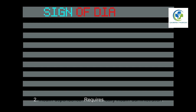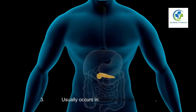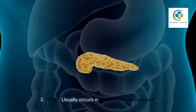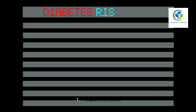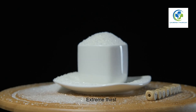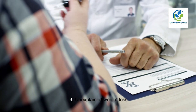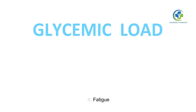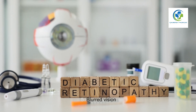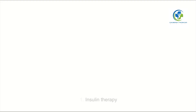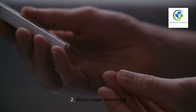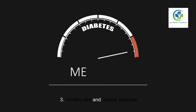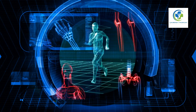Key characteristics of type 1 diabetes: autoimmune nature — the immune system attacks pancreatic cells; insulin dependence — requires daily insulin administration; onset usually occurs in childhood or adolescence. Symptoms include frequent urination, extreme thirst, unexplained weight loss, fatigue, and blurred vision. Management involves insulin therapy, blood sugar monitoring, and a healthy diet with regular exercise.